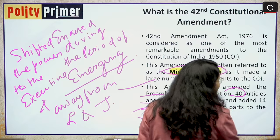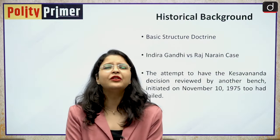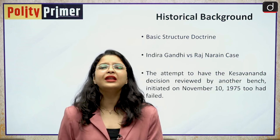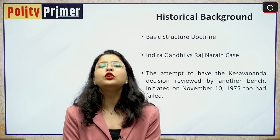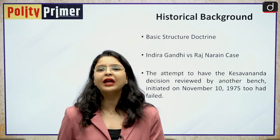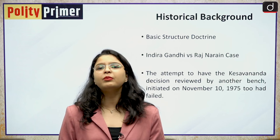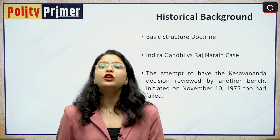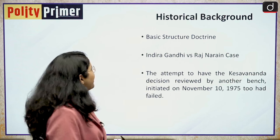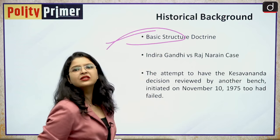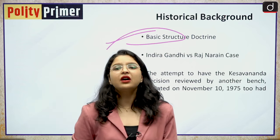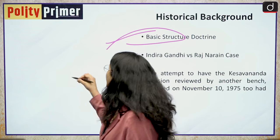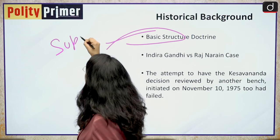If we try to understand the historical background behind this amendment — we have been discussing the 38th and 39th constitutional amendment acts, so we know what was the historical aspect at that point of time. There was an ongoing tussle between the judiciary and the parliament. There was the evolution of the basic structure doctrine, and the then parliament of India was not really happy with it — it was irked by the basic structure doctrine. And this was the first time when we saw that supersession of judges happened.